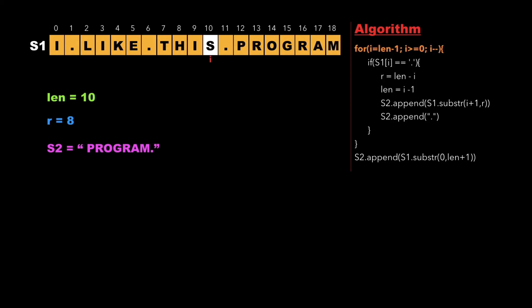We decrement i, which now points to 's', and keep checking for a dot. At index 6 we find a dot — s1[i] equals dot. We update r as length minus i, which is 4.